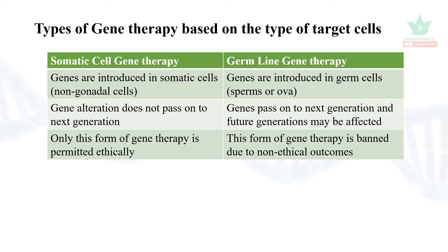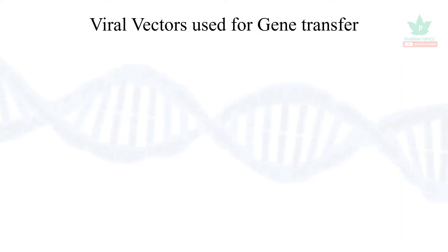In germline gene therapy, the genes are introduced into the sperm or ova and are passed on to the next generation or future generations. This type of germline gene therapy is not ethically approved till now because of the ethical issues involved.